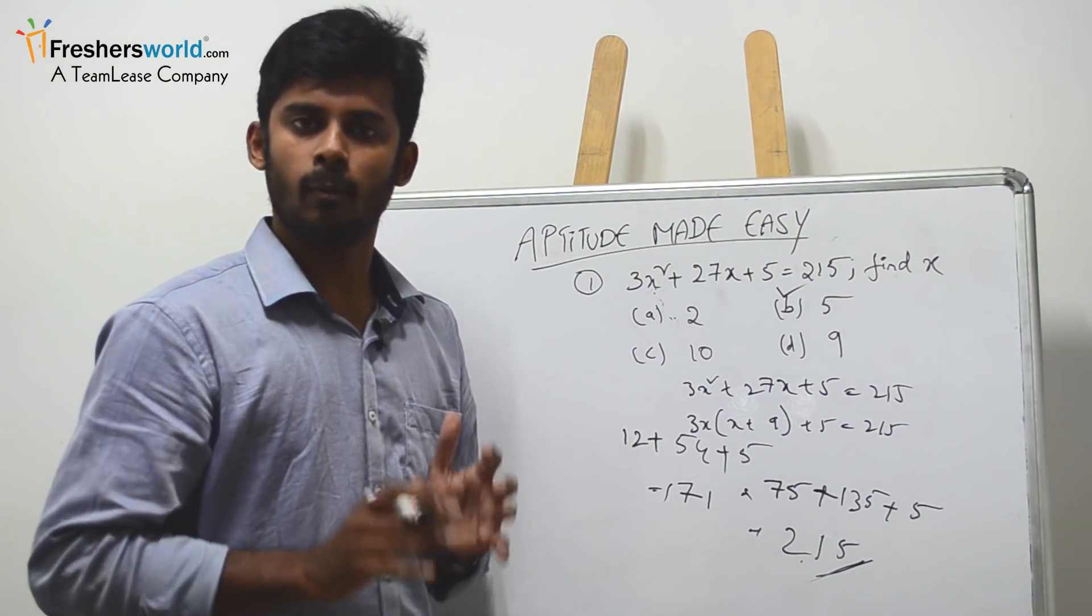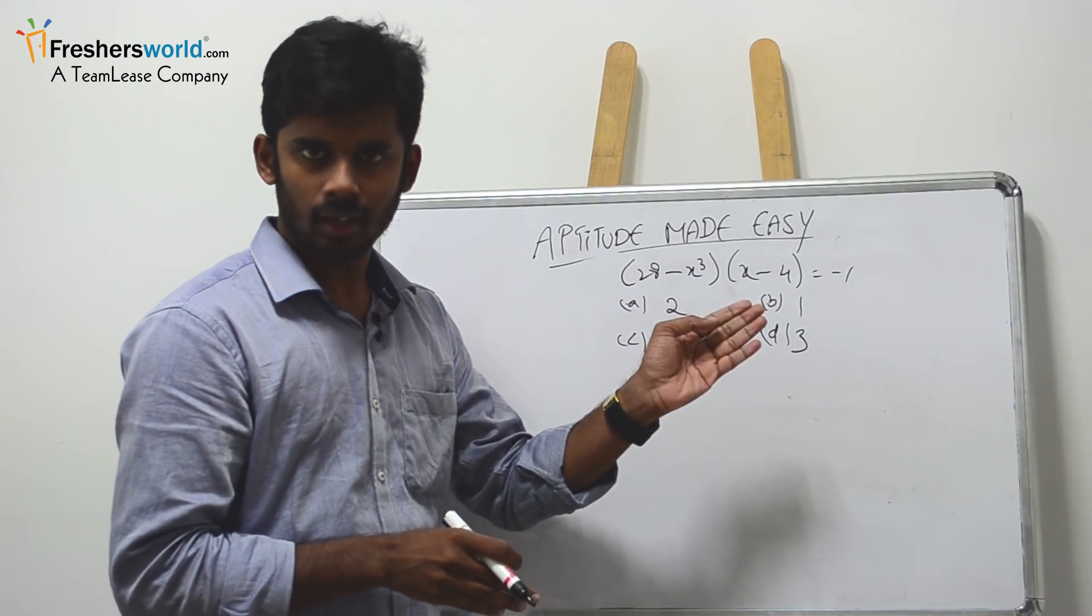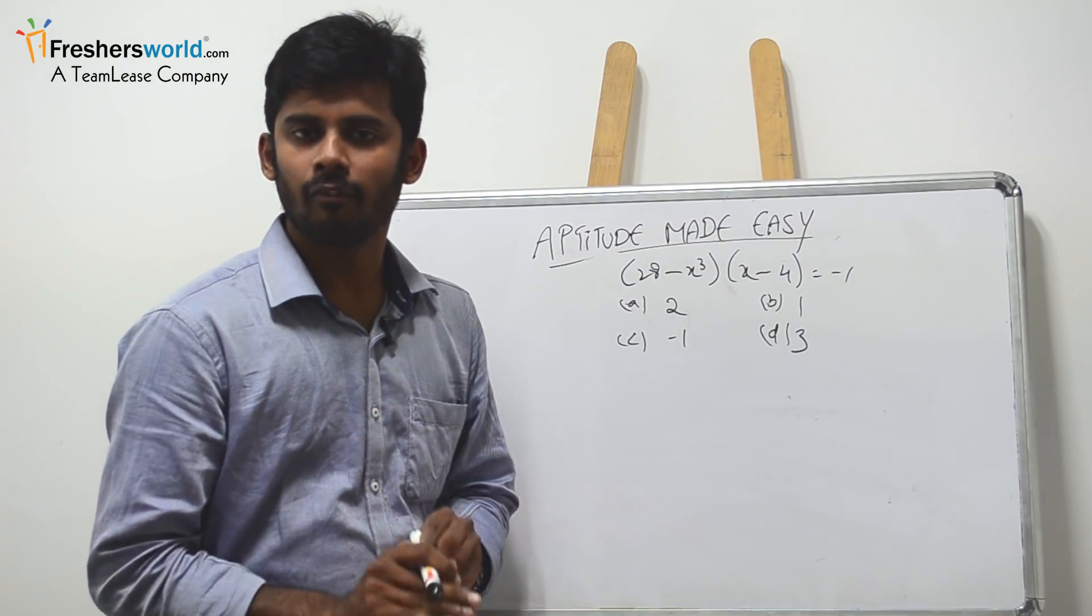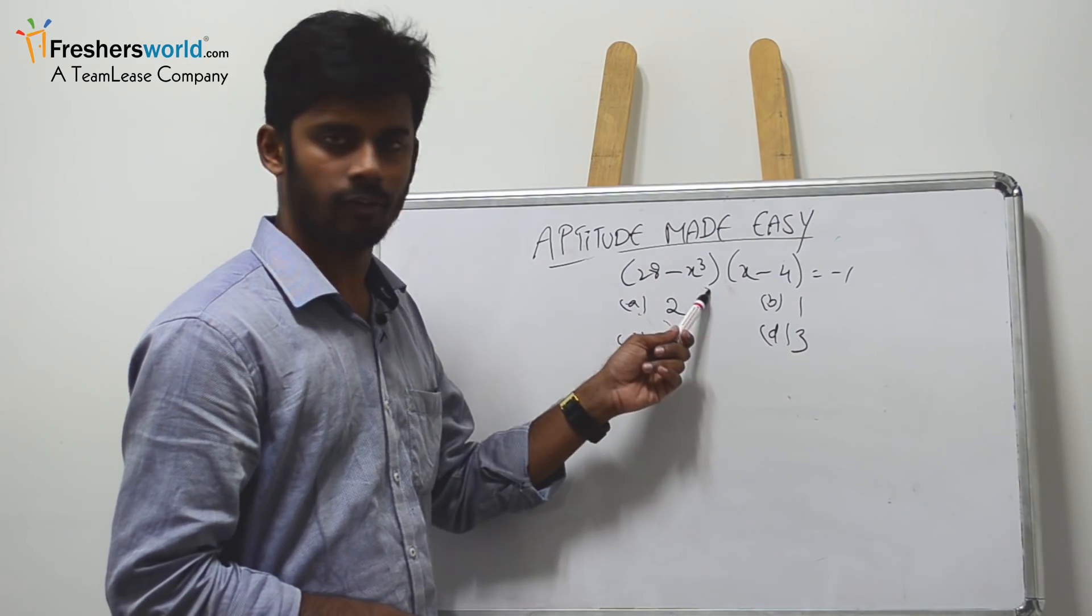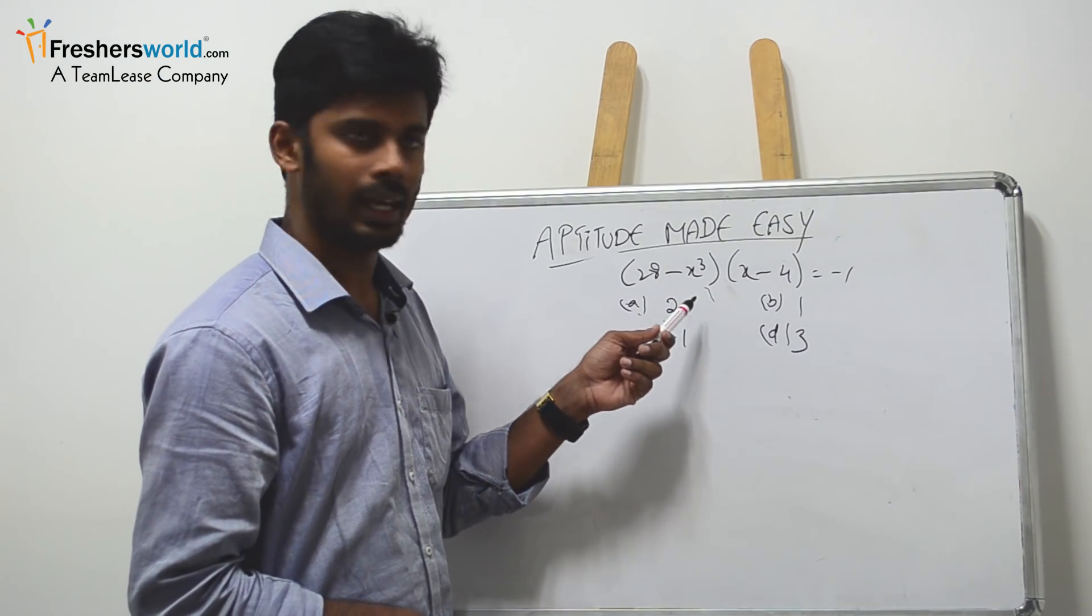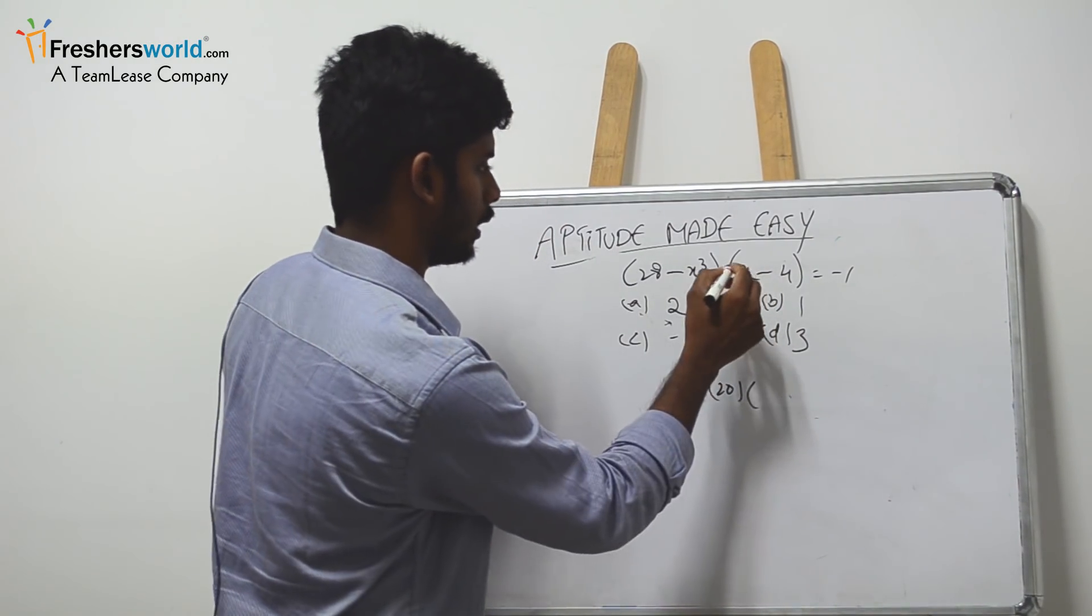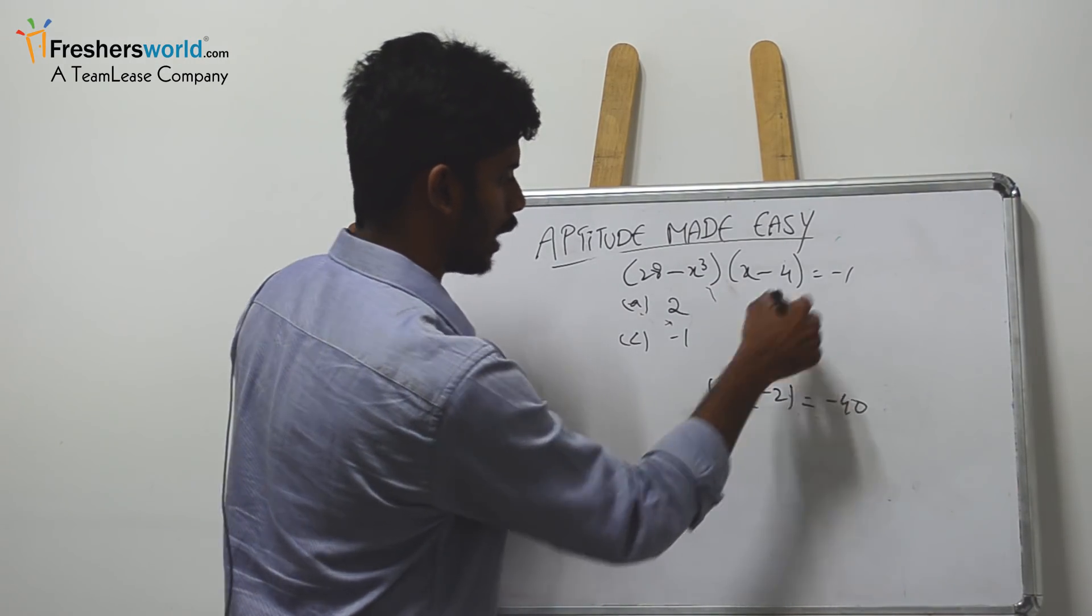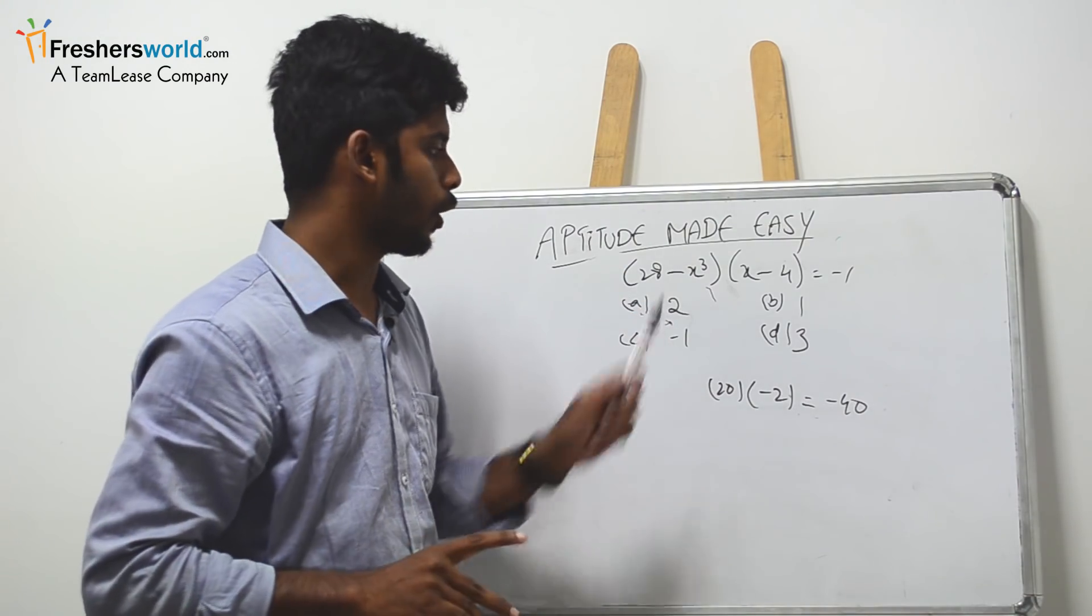Let's see a similar problem. Earlier we took an equation, and now it's similar. If you get this kind of question, do the same process. Keep the option in place of x. When you keep 2, it's 2 to the 4 is 16, minus 8 is 8, times 2 minus 4 equals minus 40. So LHS is not equal to RHS, so this option is wrong.